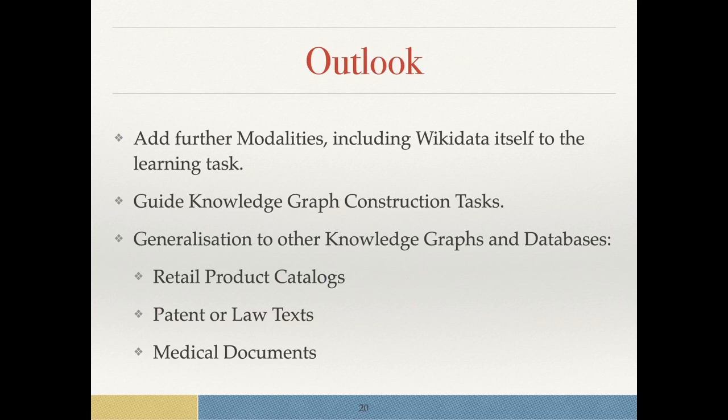We hope that we can guide knowledge graph construction tasks, as our precision is pretty high on the property prediction. Finally, we would like to look into the generalization to other knowledge graphs and databases. We can think of retail product catalogues where we have products and text descriptions, which is always useful for faceted research or other tools to have actual structured information on the products. We can also think of patent or law texts or medical documents based on paragraphs, to have some features which we can extract.